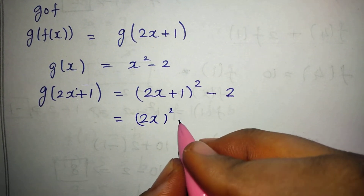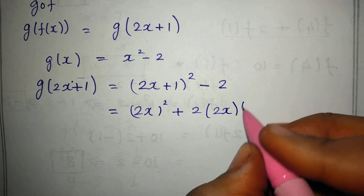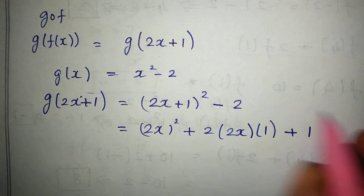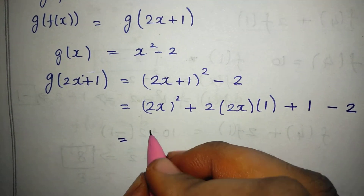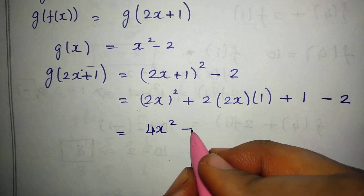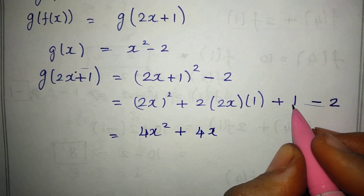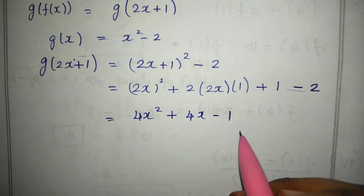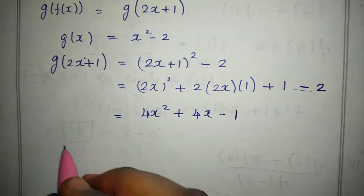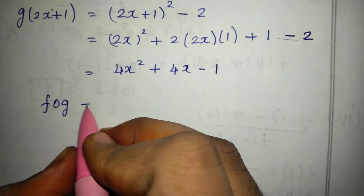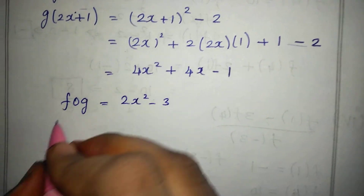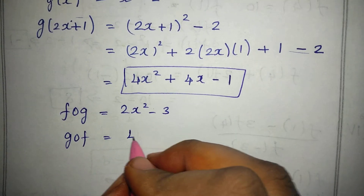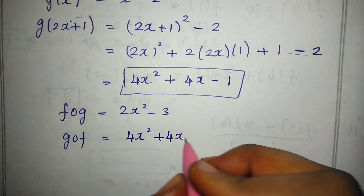Using the formula a square plus 2ab plus b square: 2x plus 1 whole squared gives 4x square plus 4x plus 1, and then minus 2, so that is 4x square plus 4x minus 1. So g of f of x is equal to 4x square plus 4x minus 1.